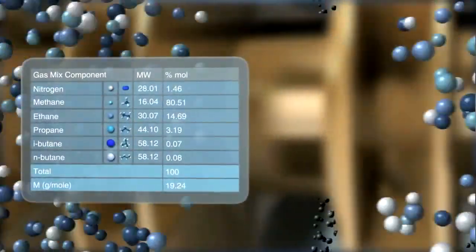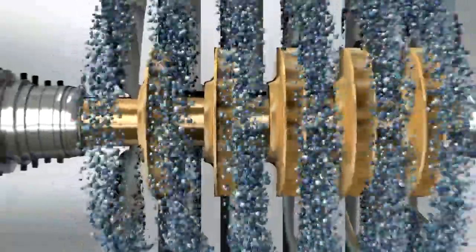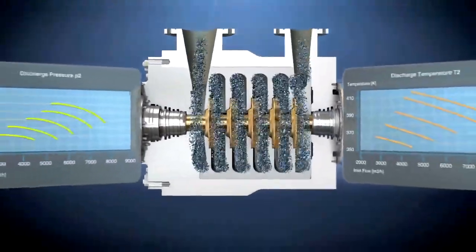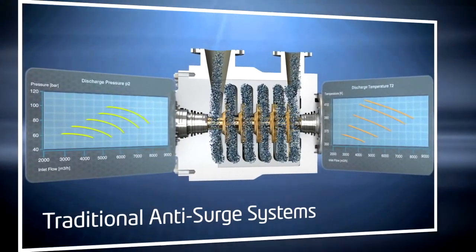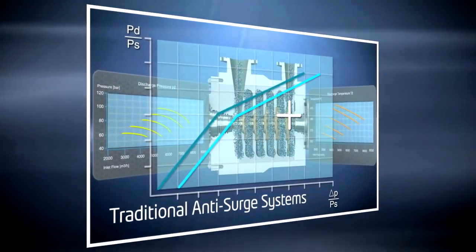Limited because it does not forecast the consequent change of the compressor behavior when it works out of its reference conditions. These systems base every evaluation necessary for the protection from surge on an approximate relation among some main operative parameters, a relation that is considered fixed and invariable.